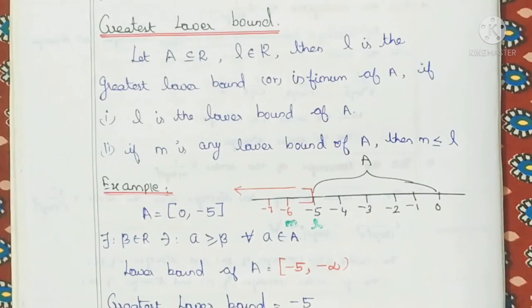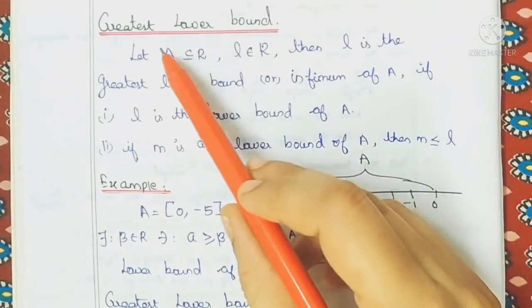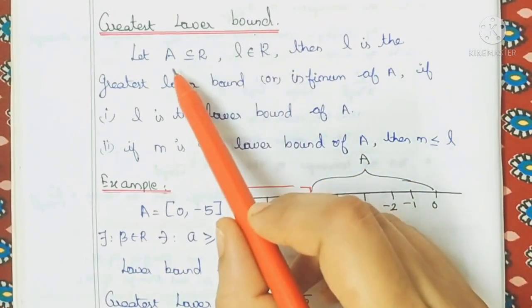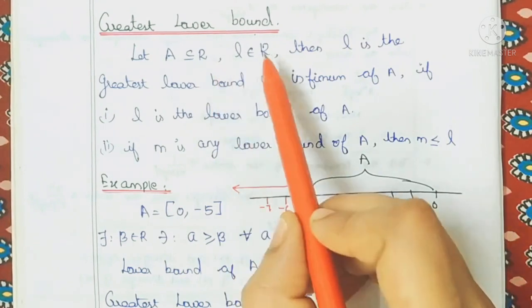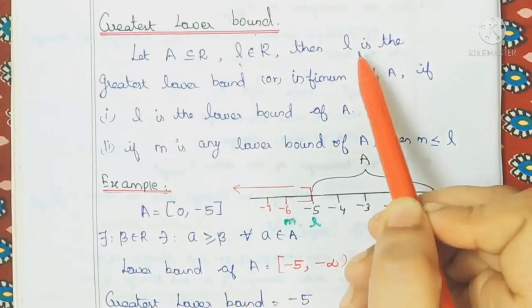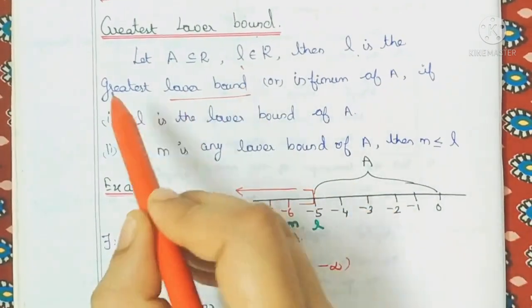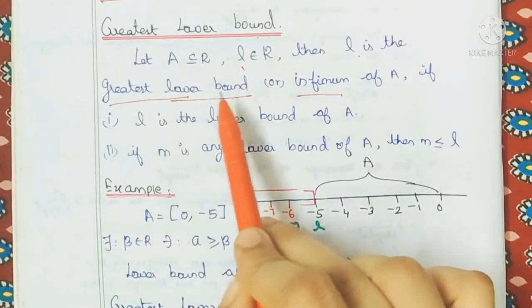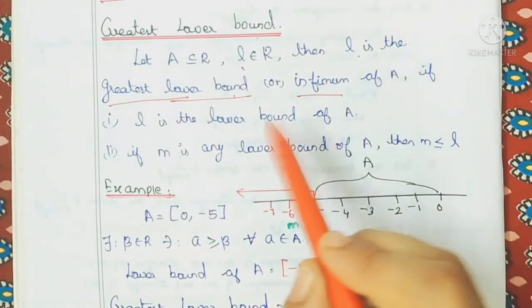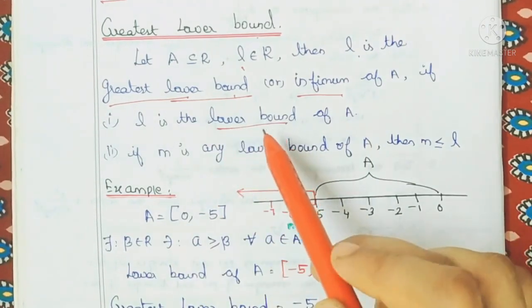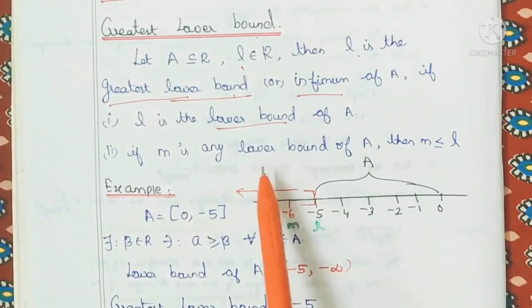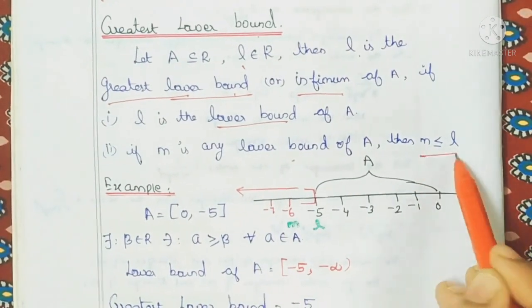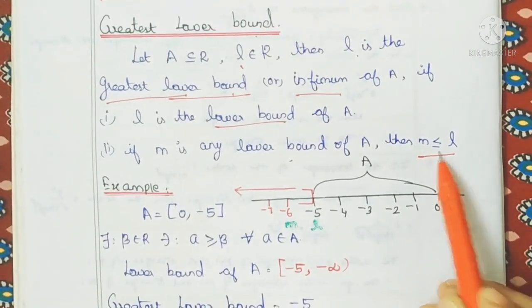Let's look at the definition of greatest lower bound. First, I will put a lower bound. As a definition: A is a subset of R. If L is a lower bound — otherwise, we can say infimum. So the greatest lower bound must satisfy two conditions: first, it is a lower bound; second, if M is any other lower bound, then M is less than or equal to L.